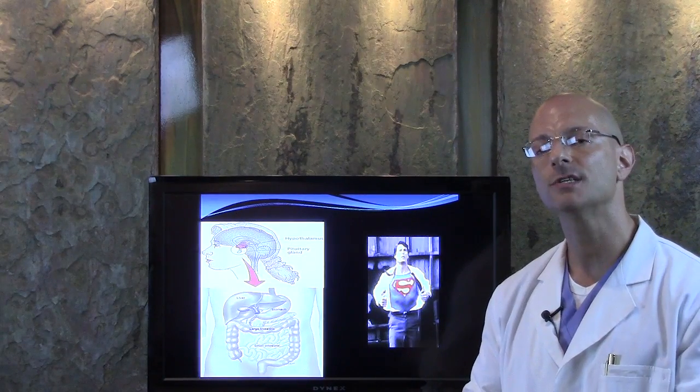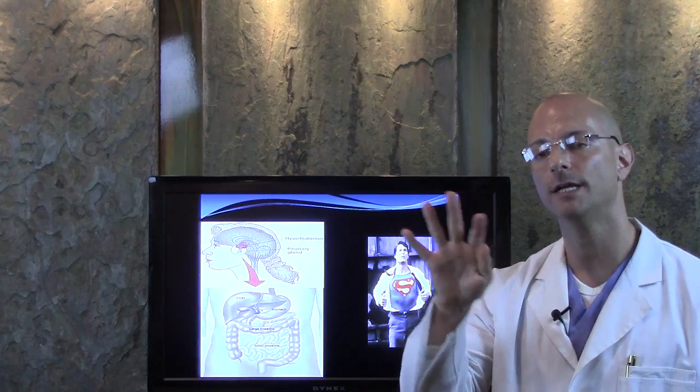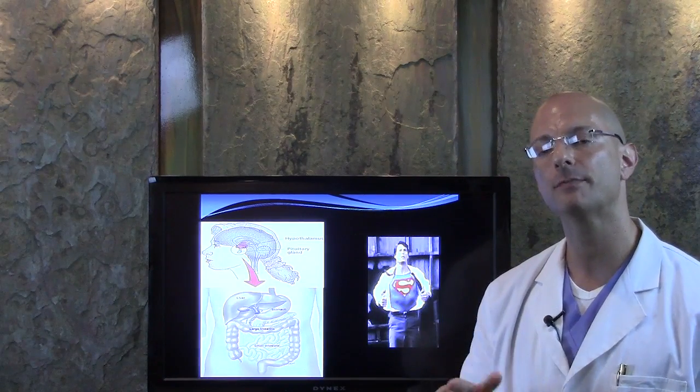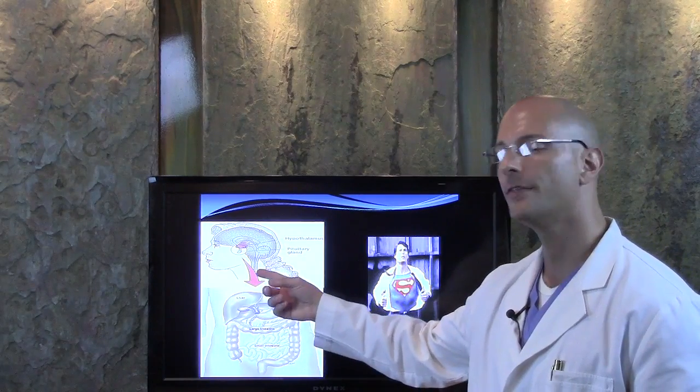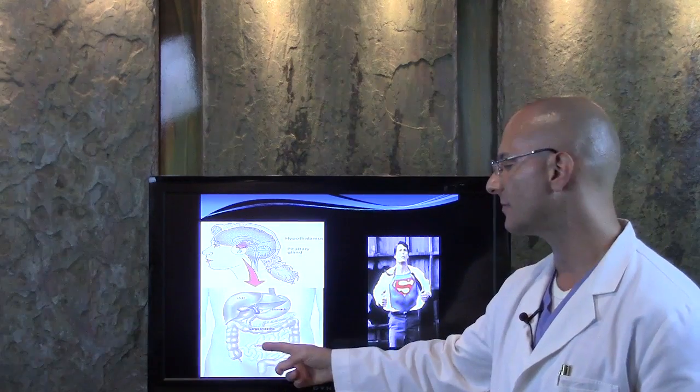Your liver then changes 60% of that four into the three. So T4 becomes T3, but only 60% of the T4 becomes T3 in the liver, and the other part of T4 becomes T3 in your intestines.